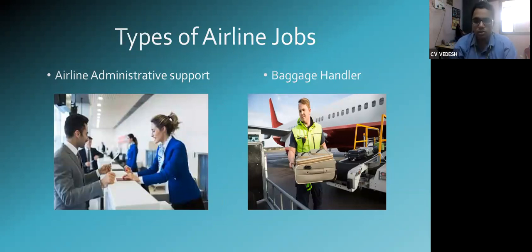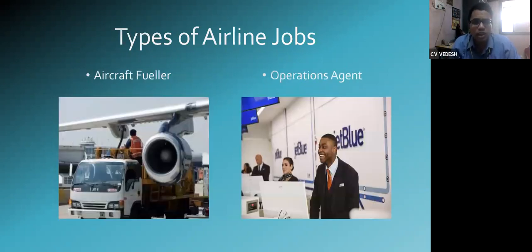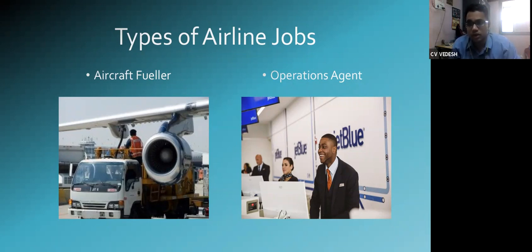Baggage control is one of the most important jobs — they handle baggage precisely, making sure that if you fly from Mumbai to Delhi, your baggage also travels there. There have been incidents where baggage was transported to other places, but it is returned to the proper destination within a few hours. Then comes the aircraft fueler, who refuels the airplane after each flight.